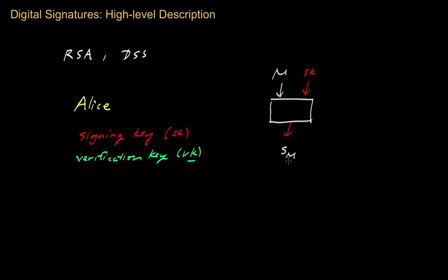Digital signature schemes are designed so that only the person who possesses the signing key — that private signing key — is capable of generating this type of signature, S sub M, on the message M.